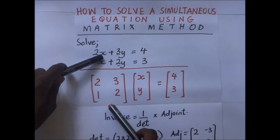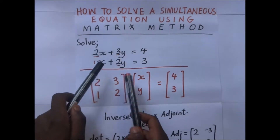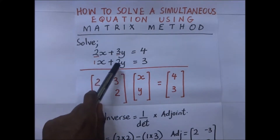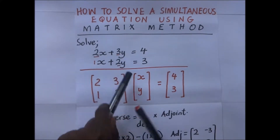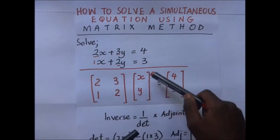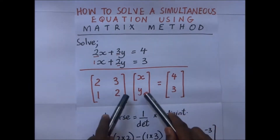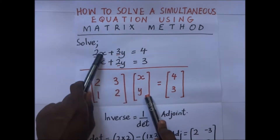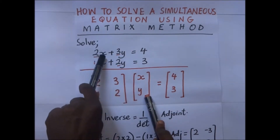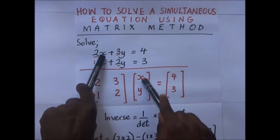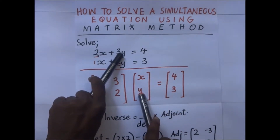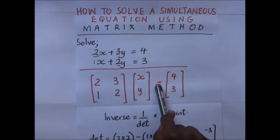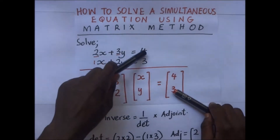We multiply this matrix by the unknowns. The unknowns here are x and y, so we follow that order — x first, then y — because x is the first term in the equations. If it were 2y plus 3x, then the order of the unknowns would be y then x. The order depends on which unknown comes first in the equations.